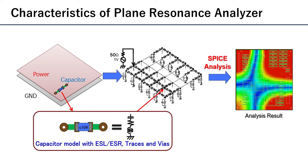Plane Resonance Analyzer feature models power and ground to SPICE's equivalent circuit and analyzes it by using a frequency sweep. This can obtain an analysis result in 1 to 10 minutes.